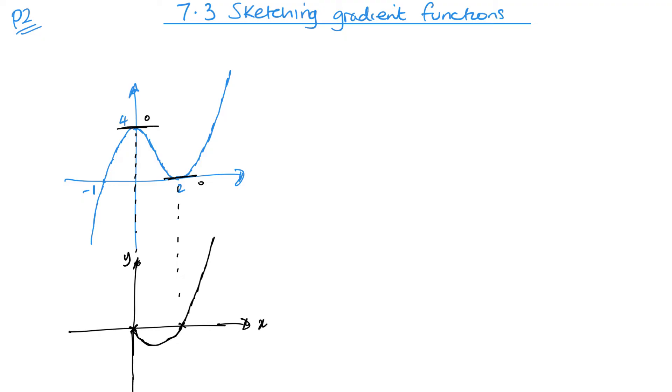And then my final section is to the left of this turning point. Now remember, when we're looking at this, we're looking from left to right. So looking left to right, this is increasing. So it is a positive gradient. And a positive gradient would be for the function above the line.